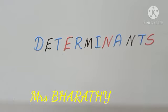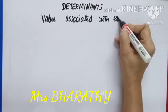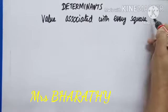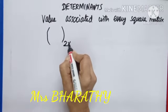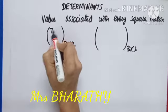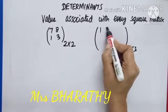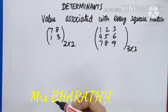Good morning children. In today's class we are going to learn about determinants. What is a determinant? A value associated with every square matrix, we call a determinant. So determinants can be done with only square matrices. A square matrix has order 2 by 2 or 3 by 3 — meaning 2 rows and 2 columns, or 3 rows and 3 columns.